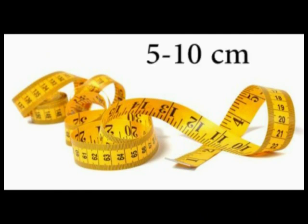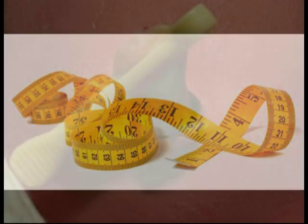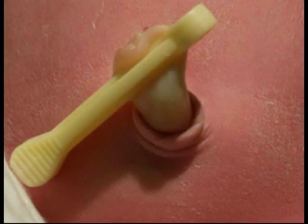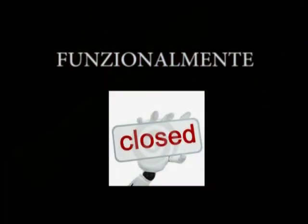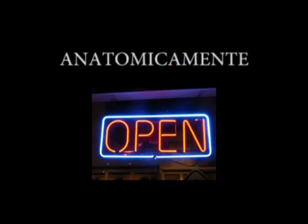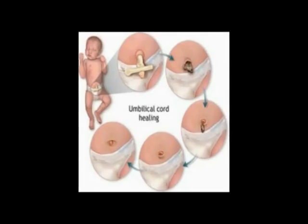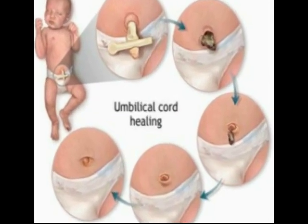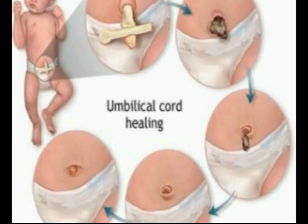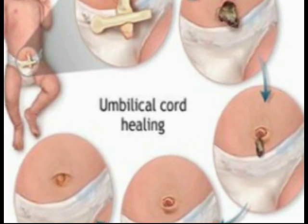La lunghezza del moncone varia in base alla distanza alla quale viene tagliato, ma solitamente è di circa 5-10 cm. Quando il cordone umbilicale si sfalda dopo la nascita, una parte delle sue strutture rimane nella base. I vasi sanguigni, infatti, sono funzionalmente chiusi, ma rimangono anatomicamente pervi fino a quando il cordone non cade e rappresentano possibili porte di ingresso per l'infezione. Solitamente, il cordone umbilicale va incontro ad un processo di essiccamento che dura al massimo 15 giorni, al termine del quale si ha la separazione tramite la sua caduta.